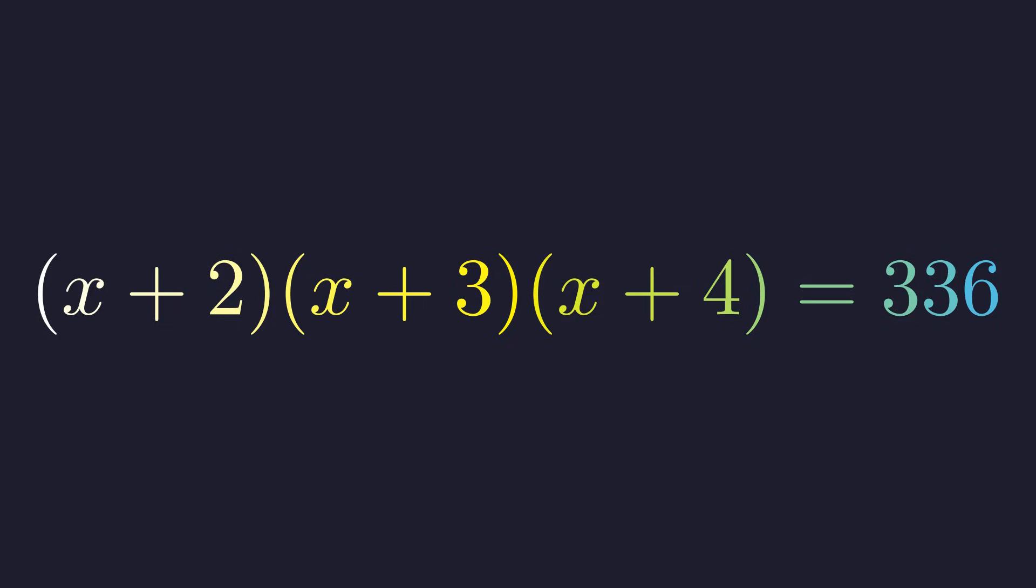The straightforward but pretty laborious method is to just multiply out the entire expression on the left. You could do it, but as you might guess, that's often a trap in problems that look like this. We'll start by multiplying the first two binomials, x plus 2 and x plus 3.